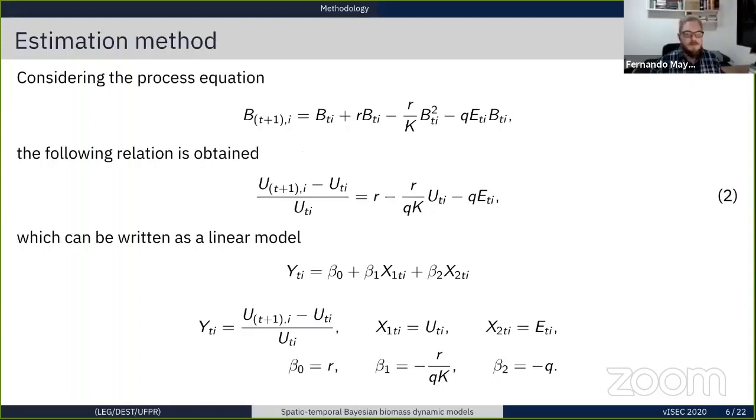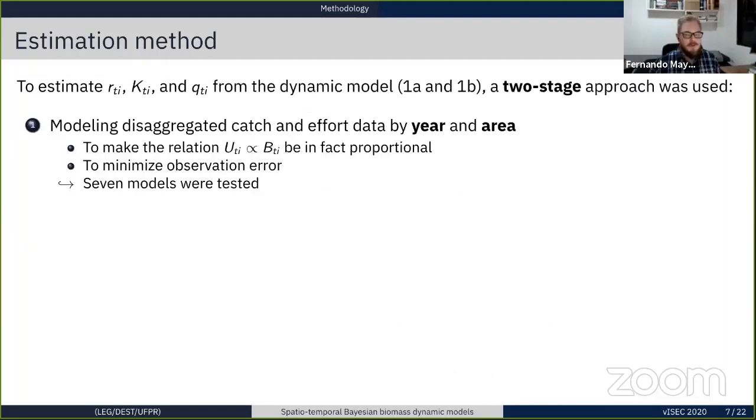To estimate the desired parameters, we used a linearized form of dynamic equations. If we consider the decomposed process equation here in the first line, and using the relation of biomass and CPUE, and after some algebra, we obtained this linearized model, which can be written as a linear model where the beta parameters correspond to some form of the desired parameters we want. More specifically, to estimate these three parameters, we developed a two-stage approach.